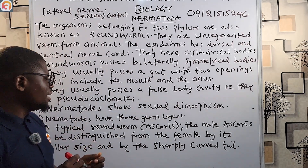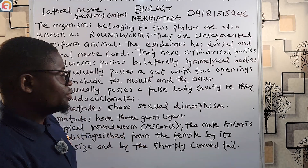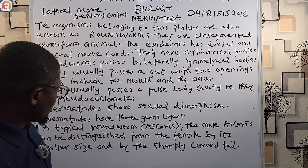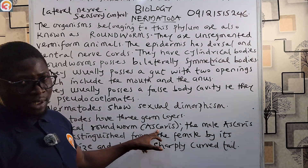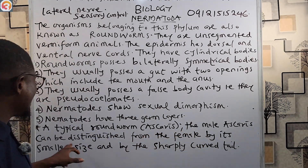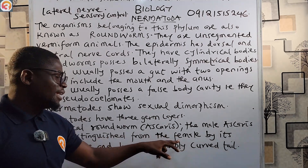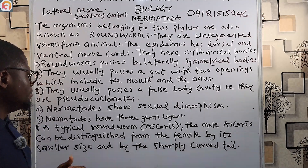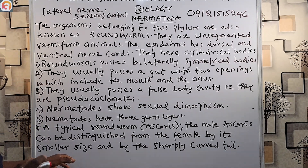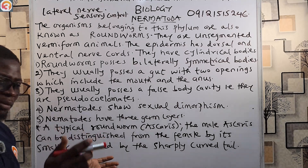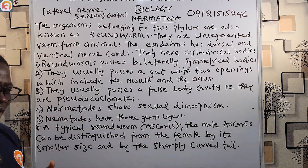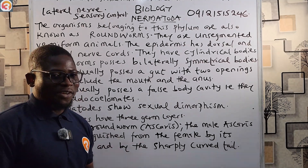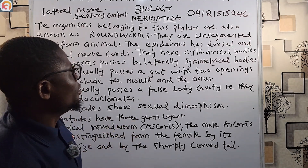Fifth, nematodes have three germ layers — three cell layers. A typical example of a nematode is Ascaris. The male Ascaris can be distinguished from the female by its smaller size and its sharply curved tail.